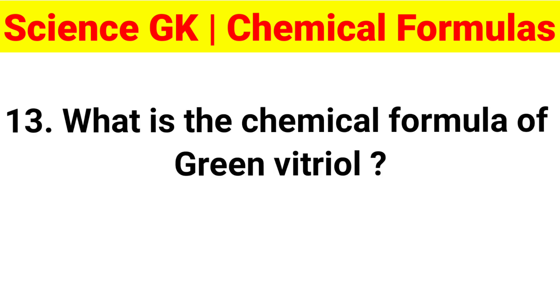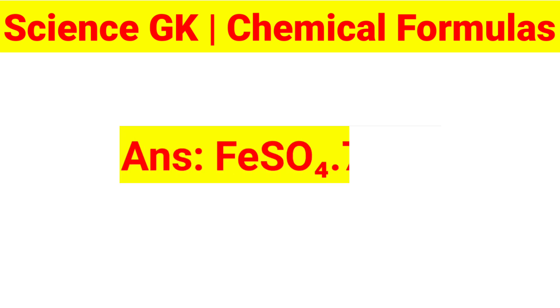Question 13: What is the chemical formula of green vitriol? Answer: FeSO4·7H2O.